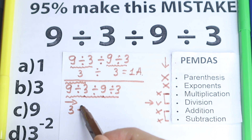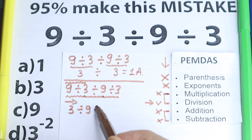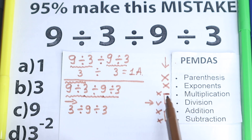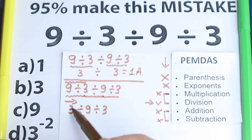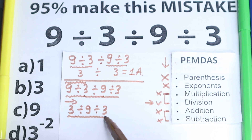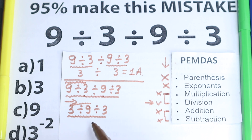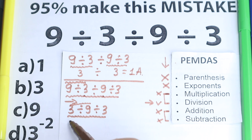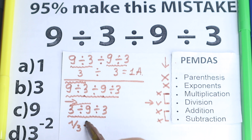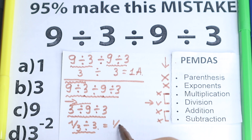We still have the remaining expression: 3 divided by 9 divided by 3. Applying the same left-to-right rule, the next division is 3 divided by 9, which equals 1 over 3. Then we have 1 over 3 divided by 3, which equals 1 over 9.